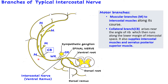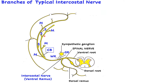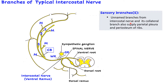Now let us look at the sensory branches. There are unnamed sensory branches (labeled S in the diagram) from the main intercostal nerve as well as from the collateral branch. These unnamed sensory branches supply the parietal pleura and the periosteum of the ribs.